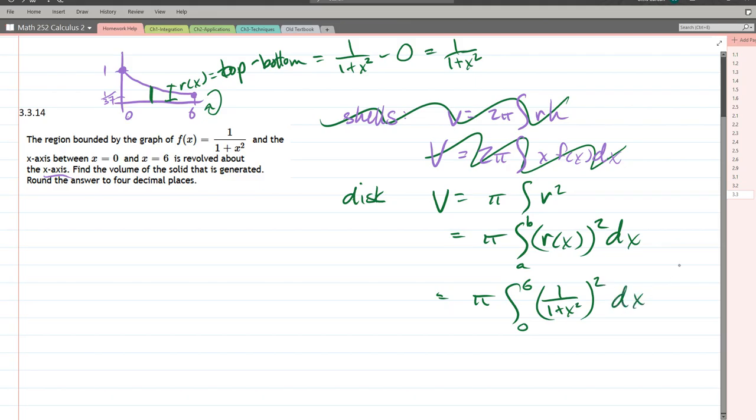So if it wasn't for this stupid square, this would be an inverse tangent, and we'd basically be done. Unfortunately, that square is there. So how in the world do we do this? Well, this 3.3 is all integrals mixed together. So we've got to figure out what strategy, how to approach this.